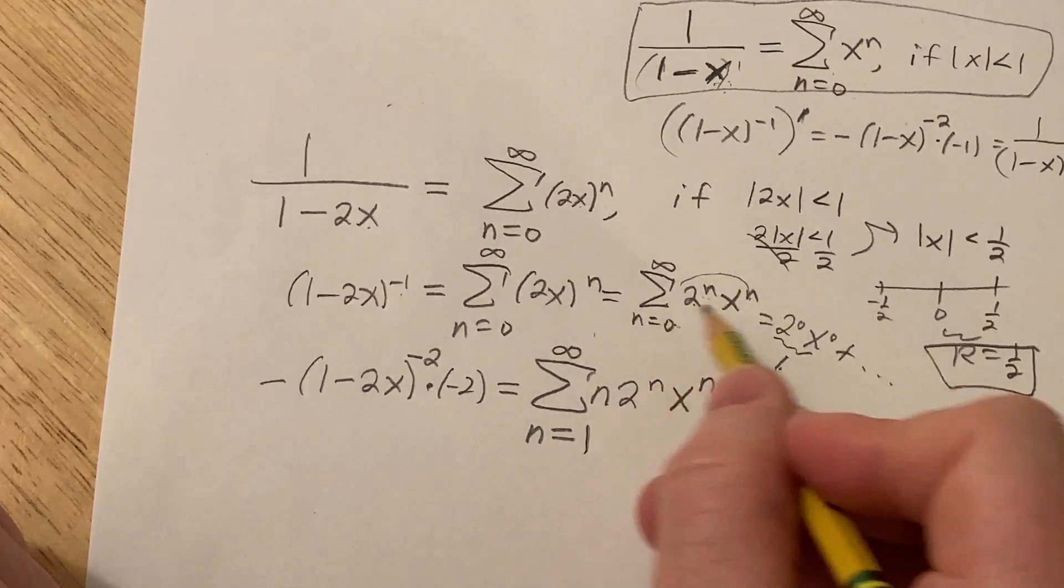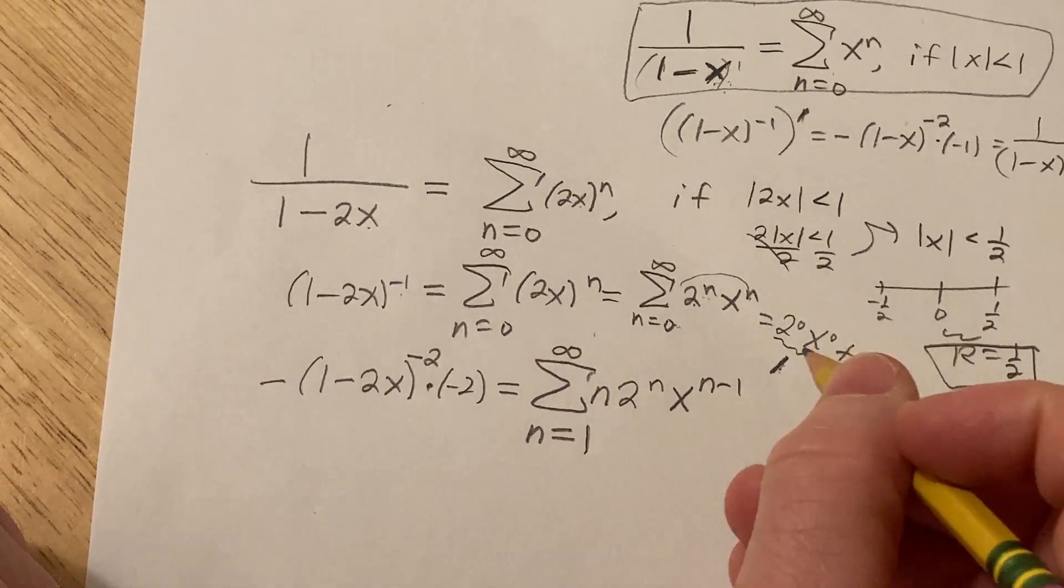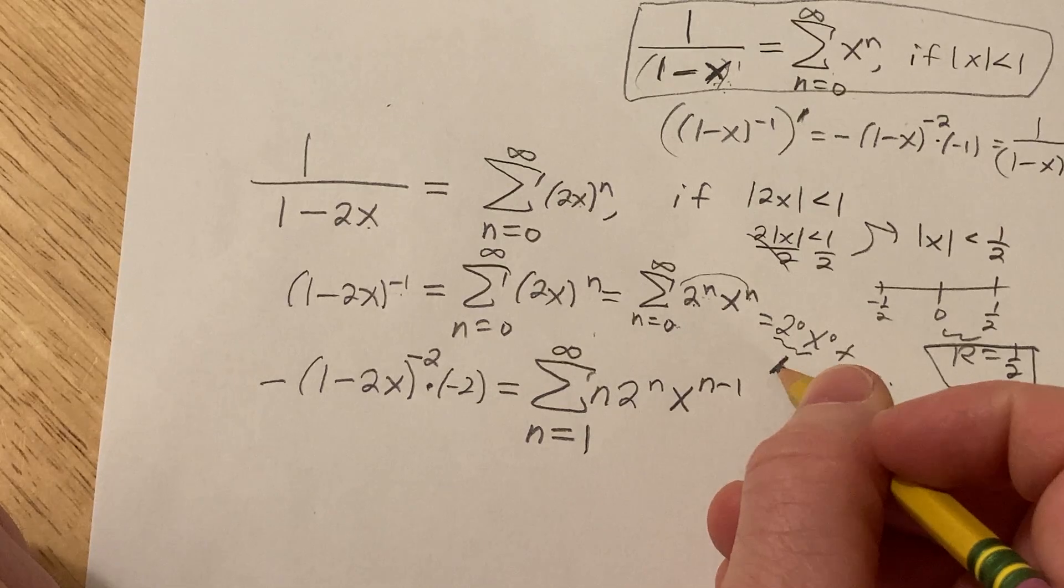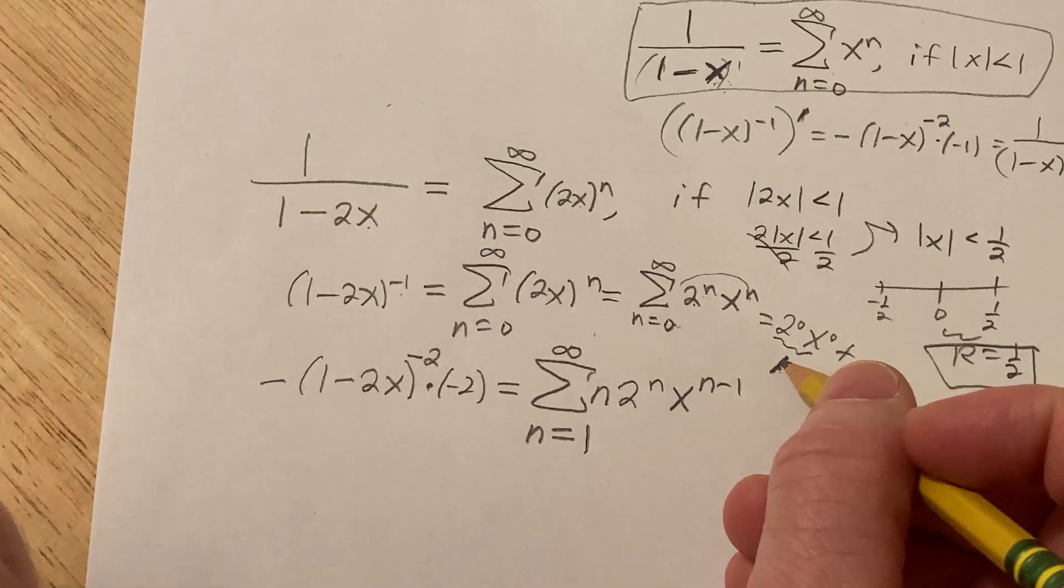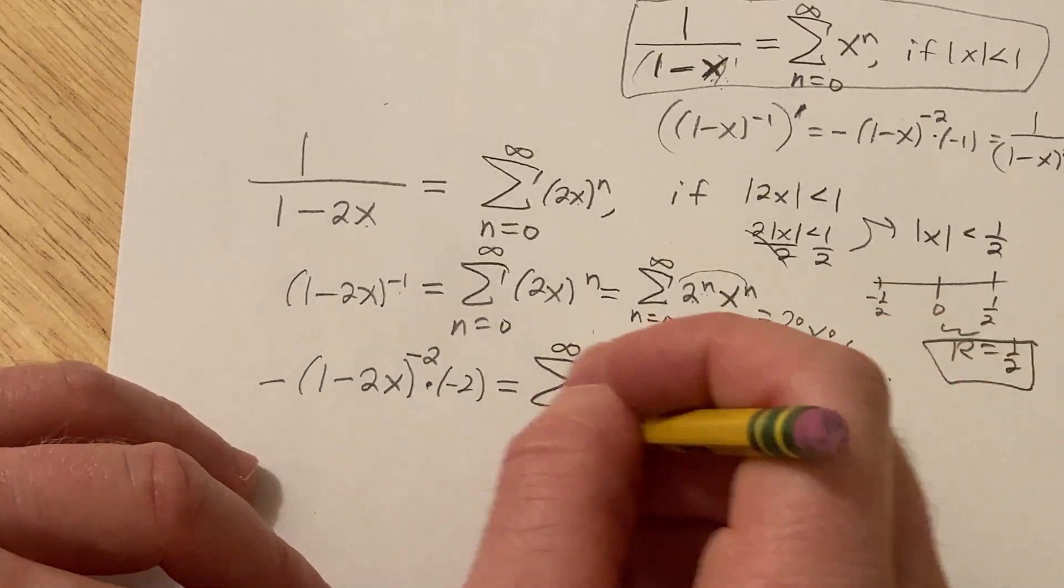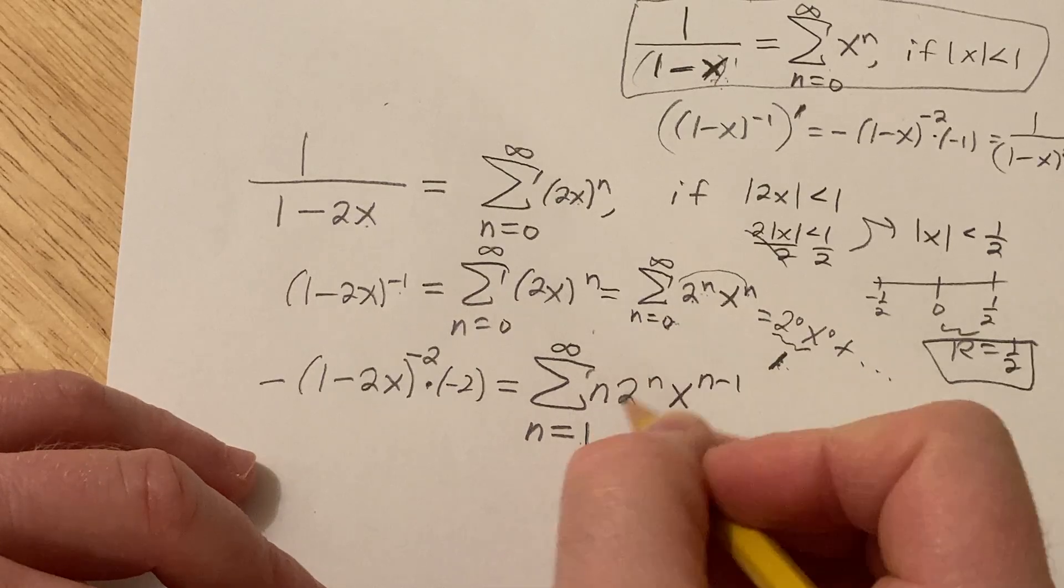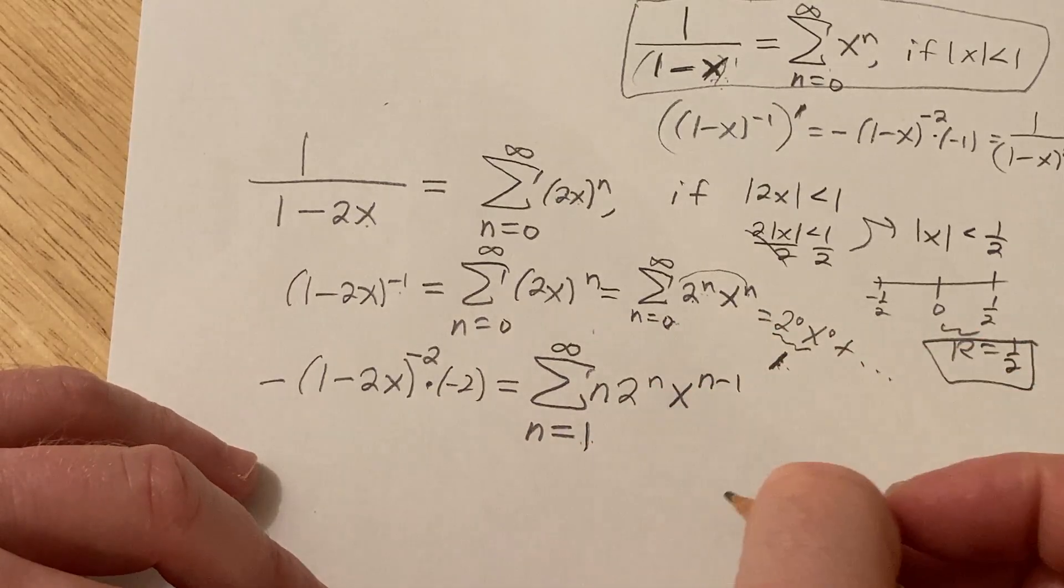So when you differentiate this infinite series, the derivative of this first term is 0. So the first, or the 0th term, rather, which is the first term. So the 0th term goes away. It vanishes, as they say in old math books. So now this is a 1, because the 0th term no longer exists after the differentiation process.